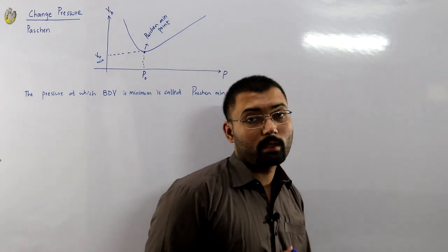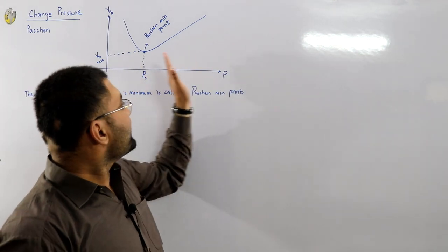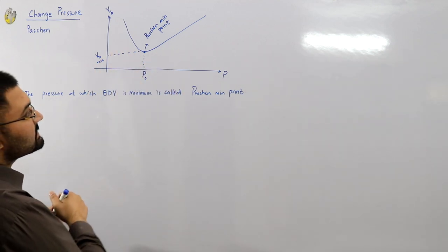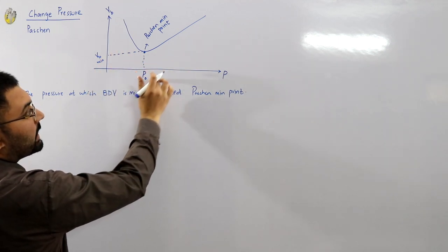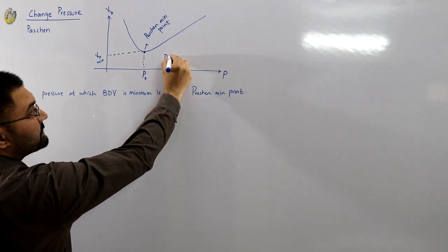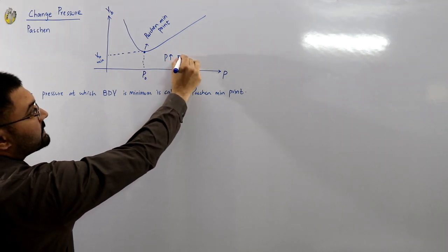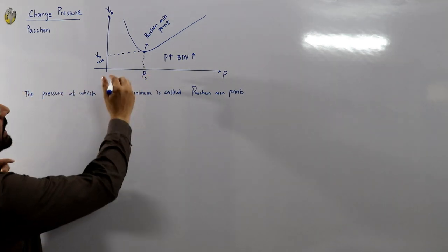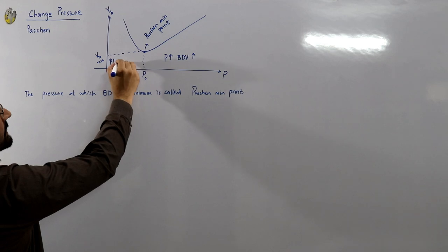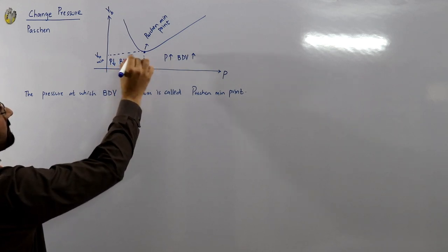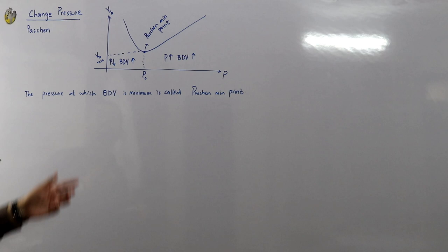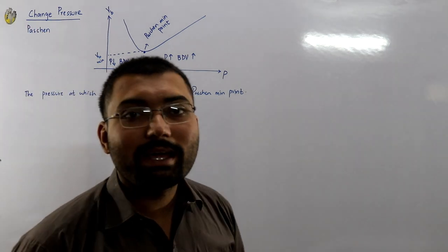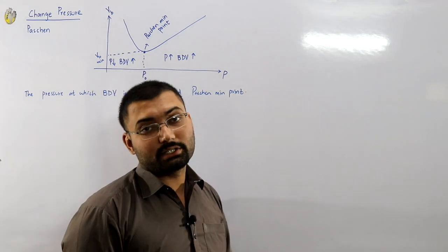From the Paschen minimum point, if you increase the pressure the breakdown voltage increases. Similarly, from the minimum point if you decrease the pressure the breakdown voltage still increases. So by playing with the pressure of a gas you can play with its breakdown strength or the dielectric strength.